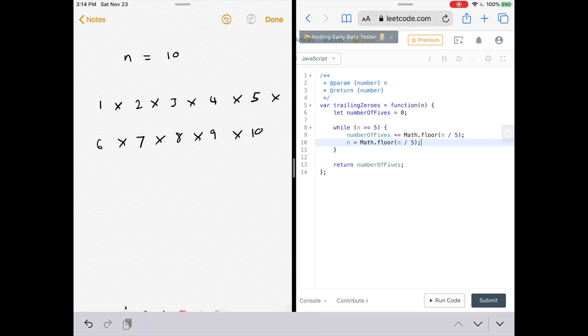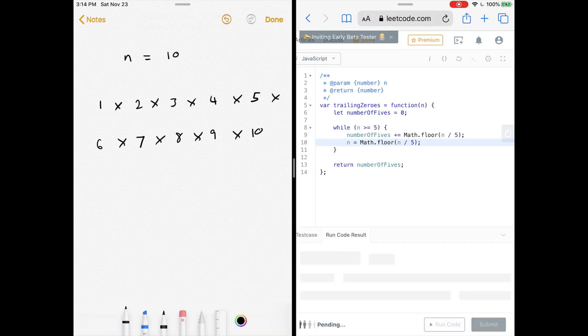And at the very end, we'll just return our number of fives. So let's run the code and see how we did. Accepted, looks good.